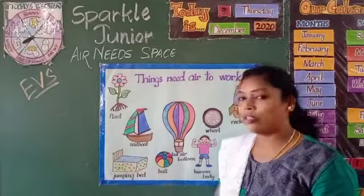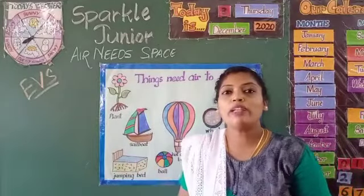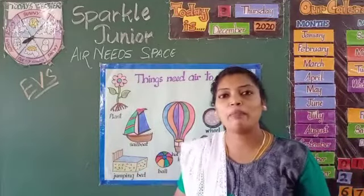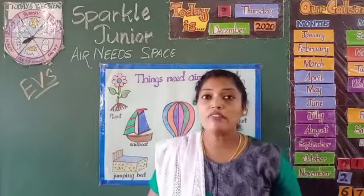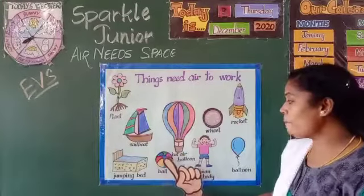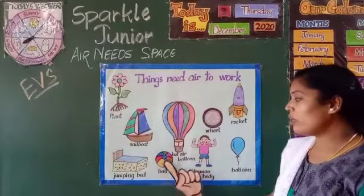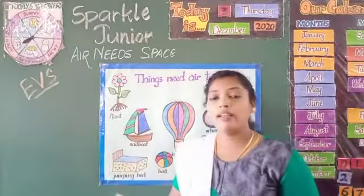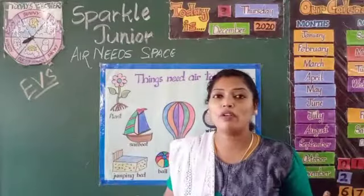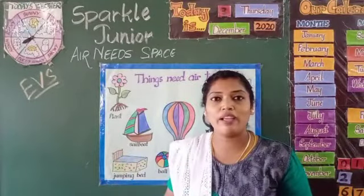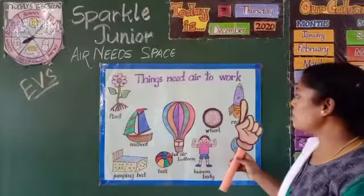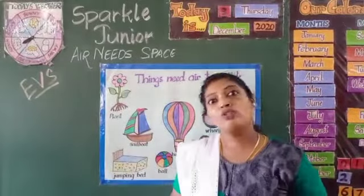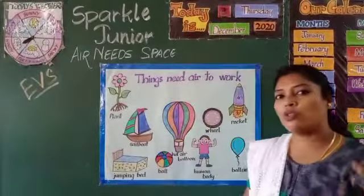Next, jumping bed. How could we jump? If the bed is filled with air, only then we could jump and play on the jumping bed. Even our toys — we do have toys like ball and balloon. If we want to play with the ball and balloon, it should be filled with air. If there is no air in the ball and balloon, we couldn't play with that. Next, look at this rocket — even a rocket also needs air to fly, to go zoom!